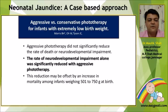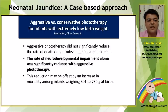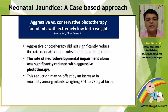When we consider phototherapy there are two schools of thought: aggressive and conservative. A long-term study by Maurice et al. suggested that the rate of neurodevelopmental impairment alone was significantly reduced when an aggressive protocol was followed. However, this aggressive phototherapy protocol did not significantly reduce the combined rate of death or neurodevelopmental impairment, so one needs to think carefully about it.